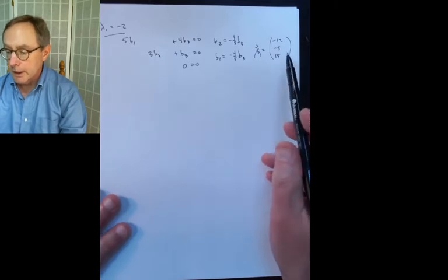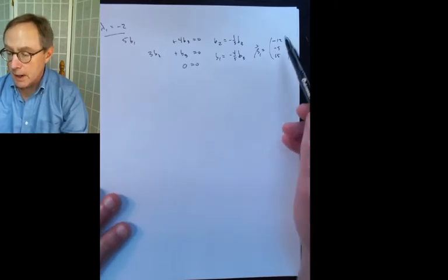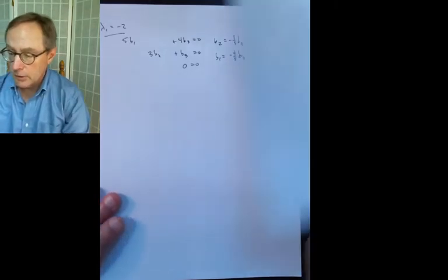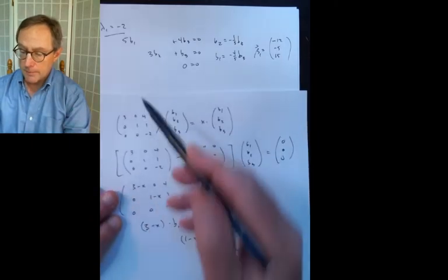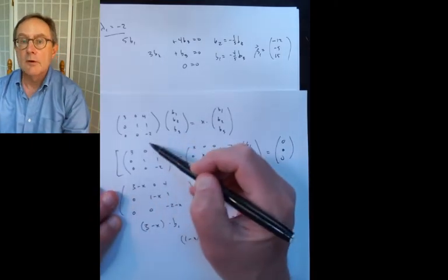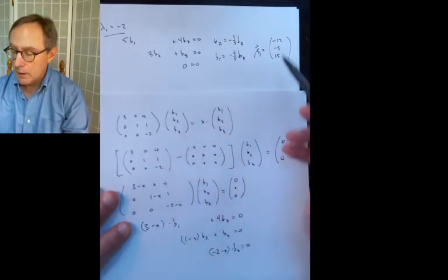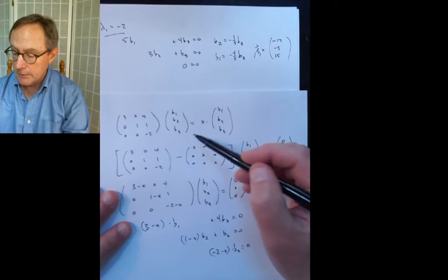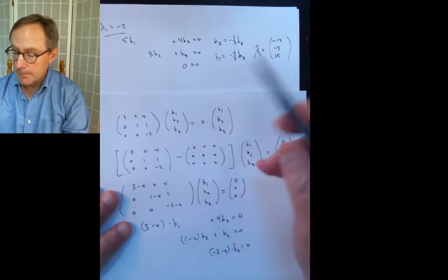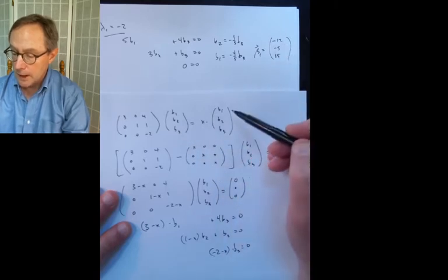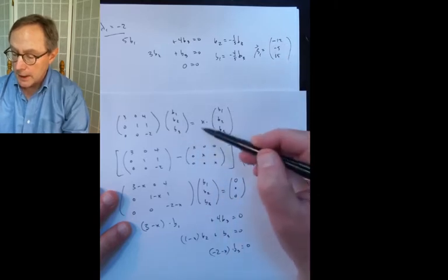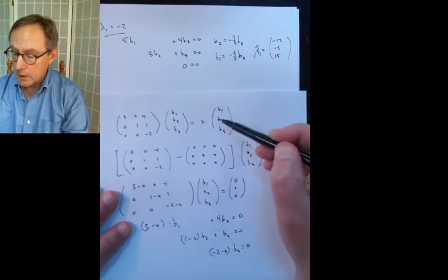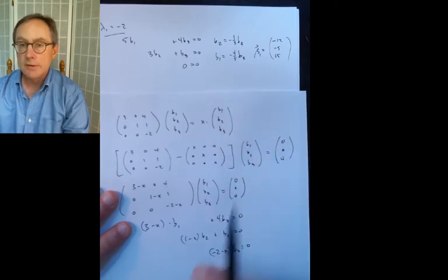If I take the original matrix [3, 0, 4; 0, 1, 1; 0, 0, -2] and multiply it by (-12, -5, 15), I should get -2 times (-12, -5, 15) — that is, the matrix multiplies the vector by the eigenvalue of -2. That checks out.